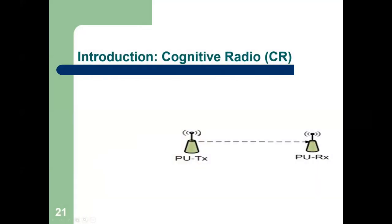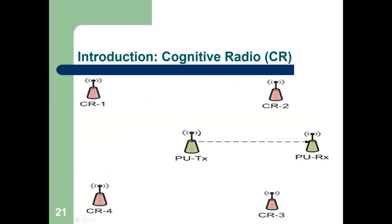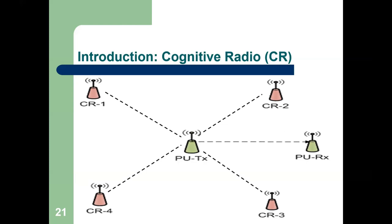In this diagram, a primary user transmitter communicates to a primary user receiver using a dedicated frequency band. Four cognitive radio users — CR1, CR2, CR3, and CR4 — watch the primary user transmitter's band and try to utilize its vacant portions. They continuously monitor the behavior of the primary user transmitter, identifying and using whatever spectrum is currently unoccupied — this is the working style of cognitive radio.